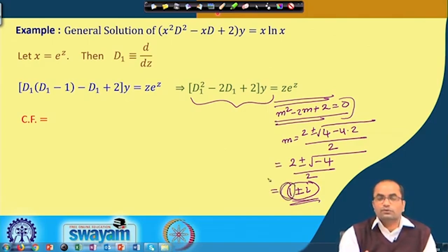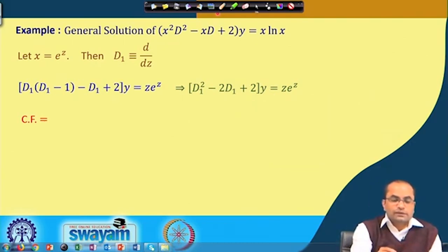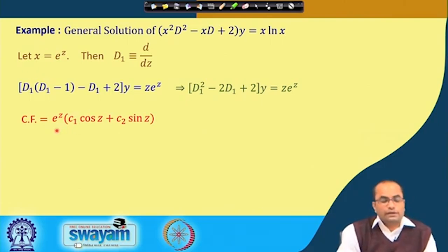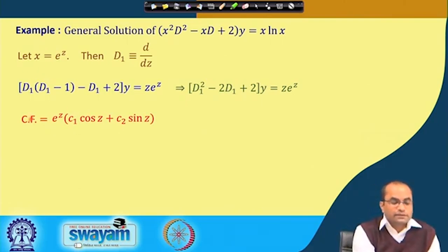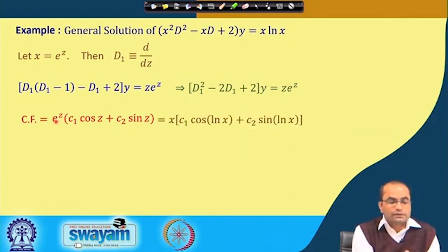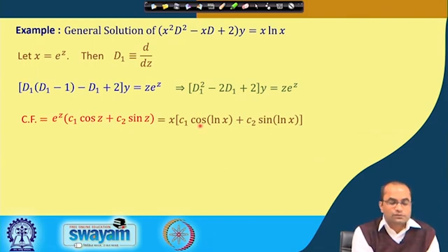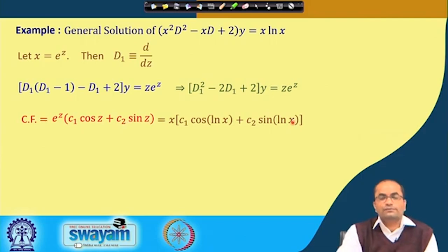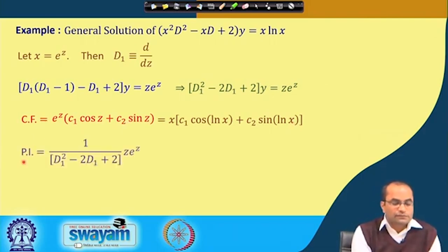Writing the complementary function back in the original variable x: e^z = x and z = ln(x), so the complementary function is x[c₁·cos(ln x) + c₂·sin(ln x)]. The particular integral is (1/(D₁² - 2D₁ + 2)) applied to z·e^z.